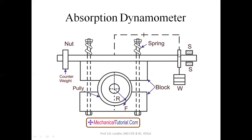This is the lever through which we are applying the load, and this is the counterbalance load so that the lever will be horizontal when no load is applied. To measure the brake power, we calculate the work done — the output is measured as the product of weight into the distance from where the load is acting to the center of the disc. The torque acting on the system is the product of load into that distance.